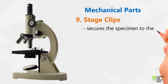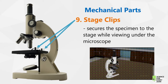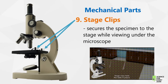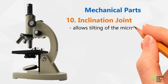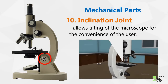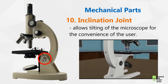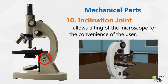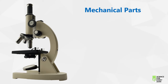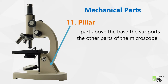Next we have the stage clips. The stage clips help secure the specimen to the stage while viewing under the microscope. Next to the stage clip, we have the inclination joint. The inclination joint allows tilting of the microscope for the convenience of the user. Next we have the pillar — the part above the base that supports the other parts of the microscope.